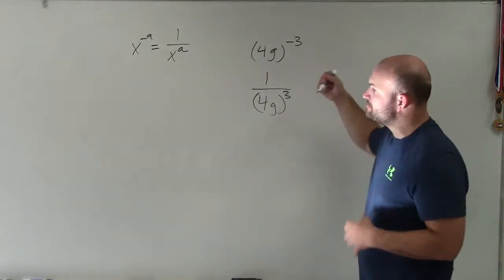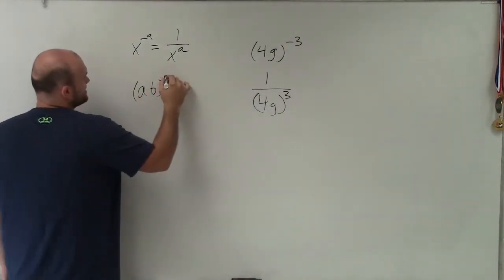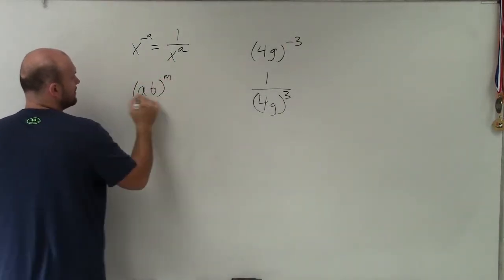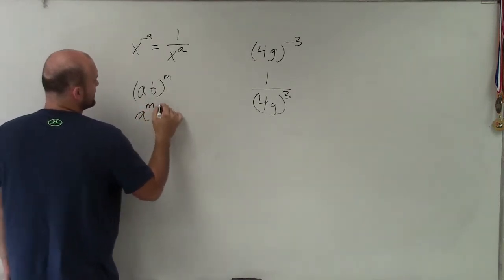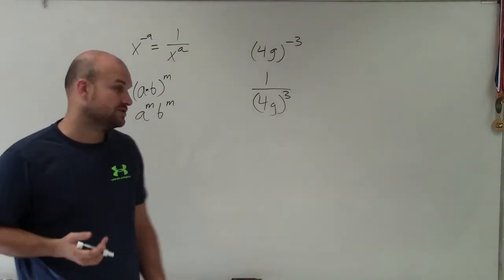Now I need to use my power to product rule, which pretty much states if I have two numbers raised to the same power, then we can distribute that power amongst them as long as they are separated by the product or the quotient.